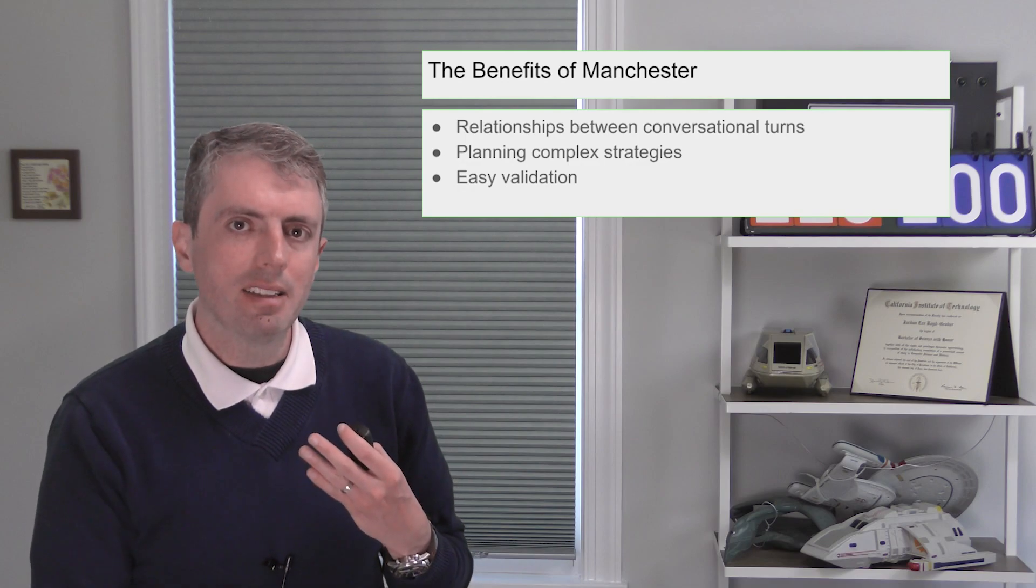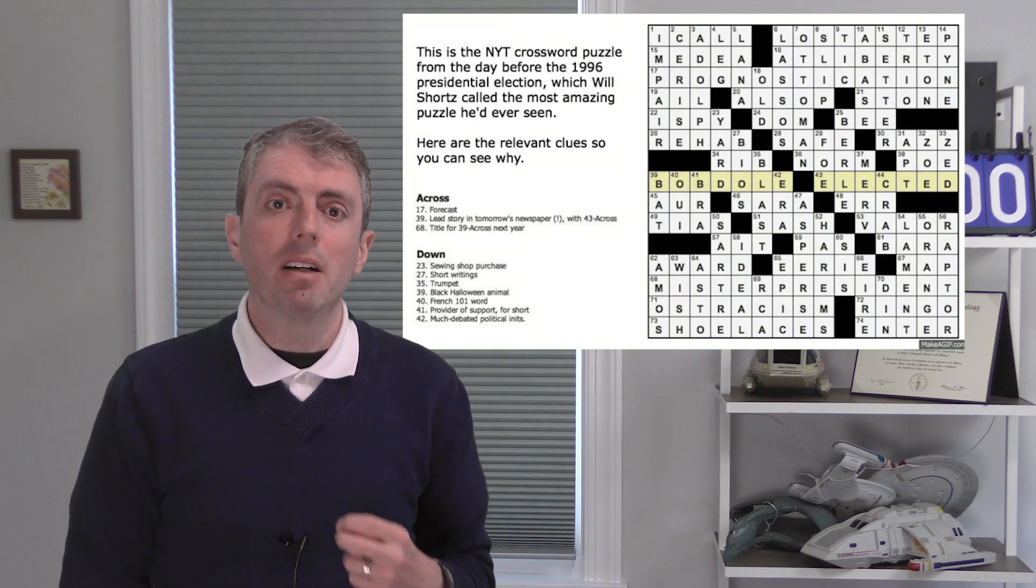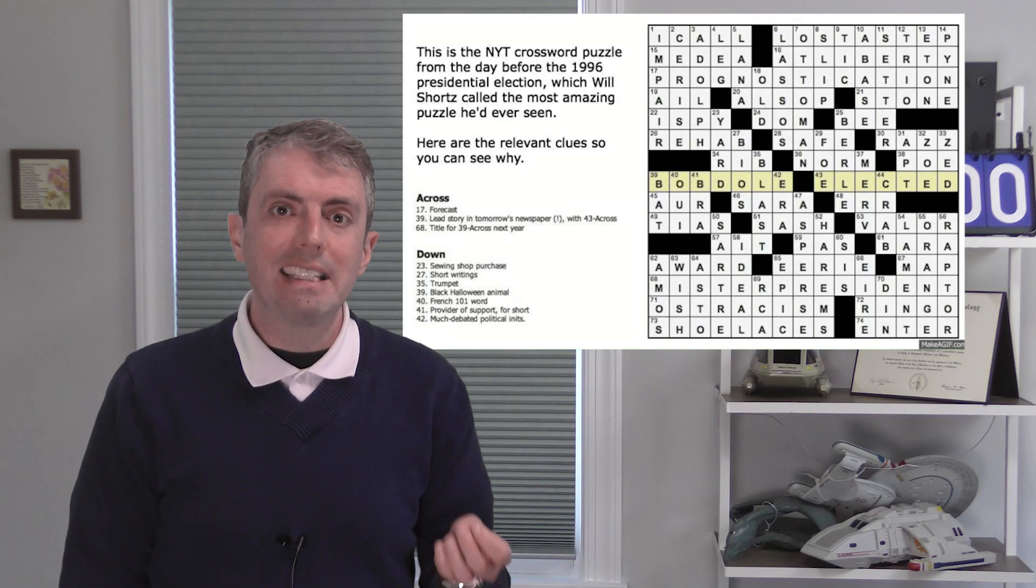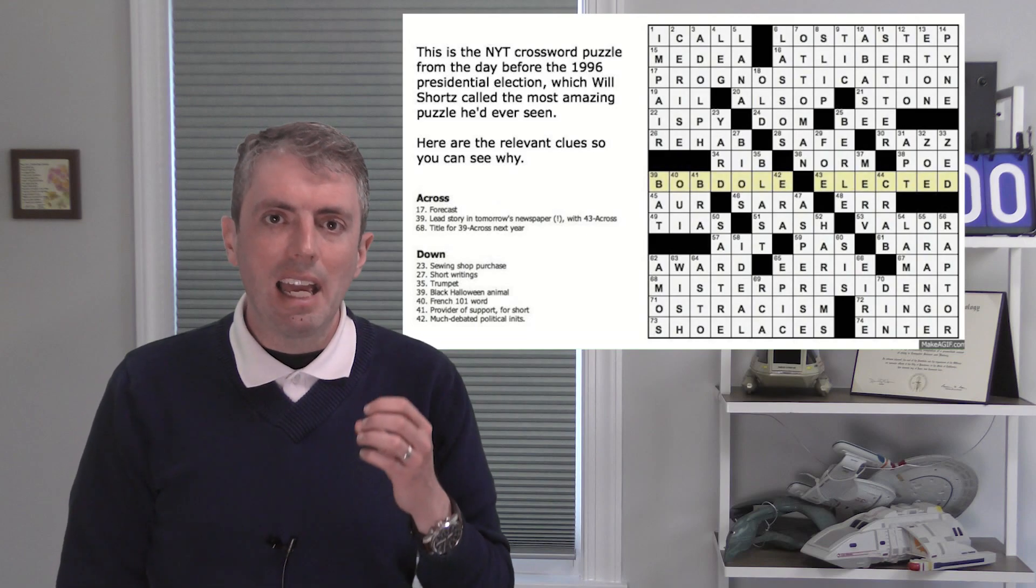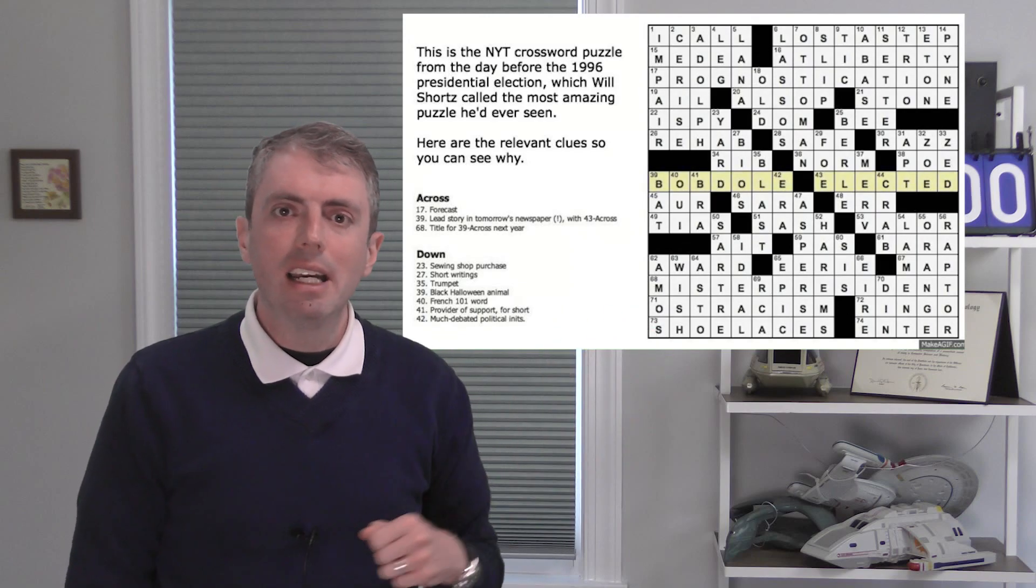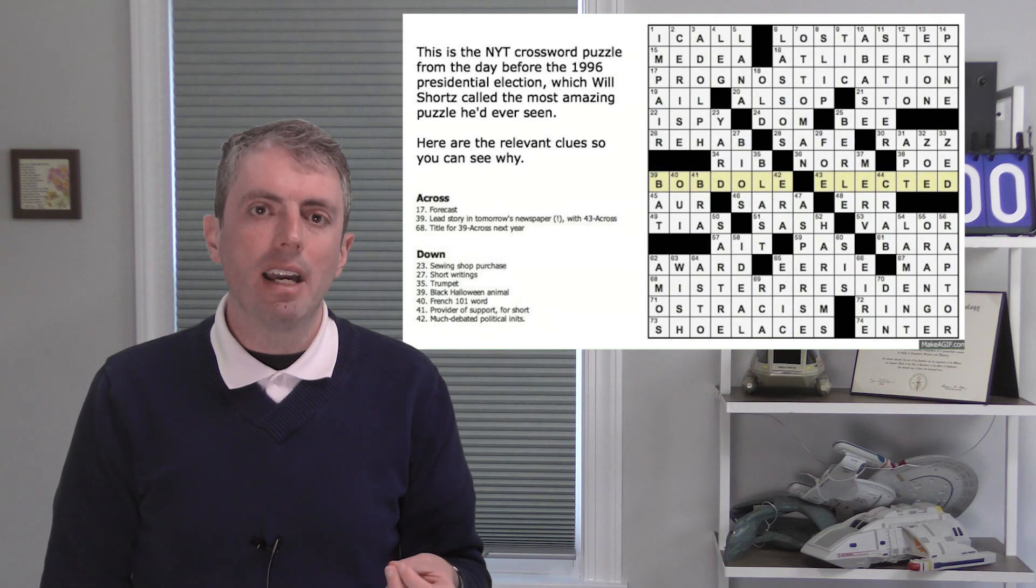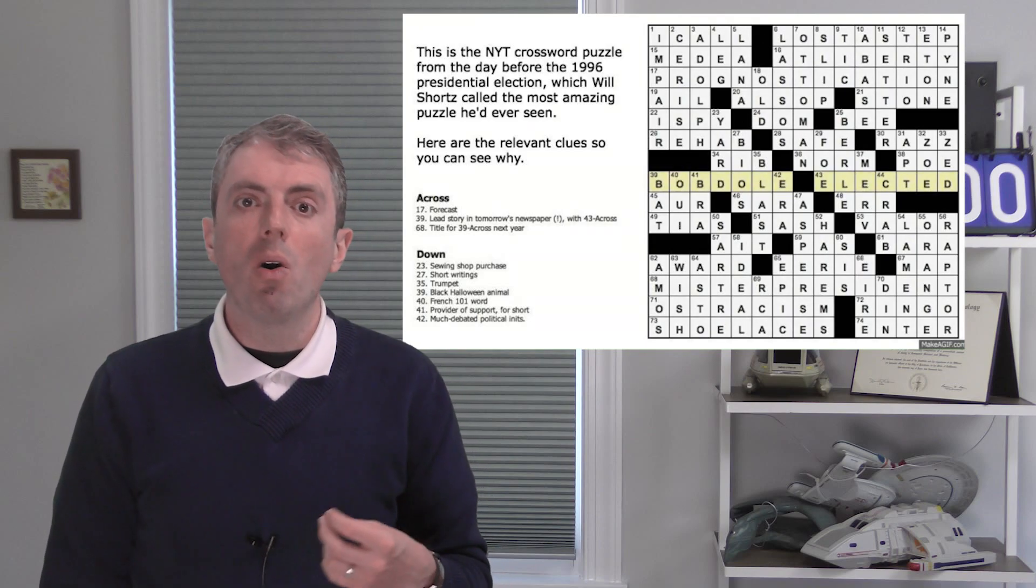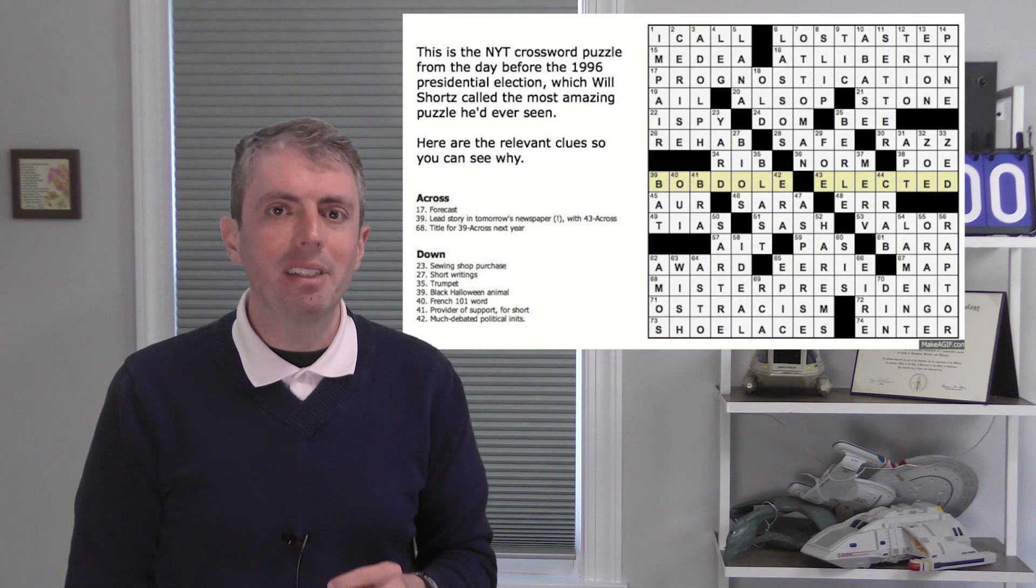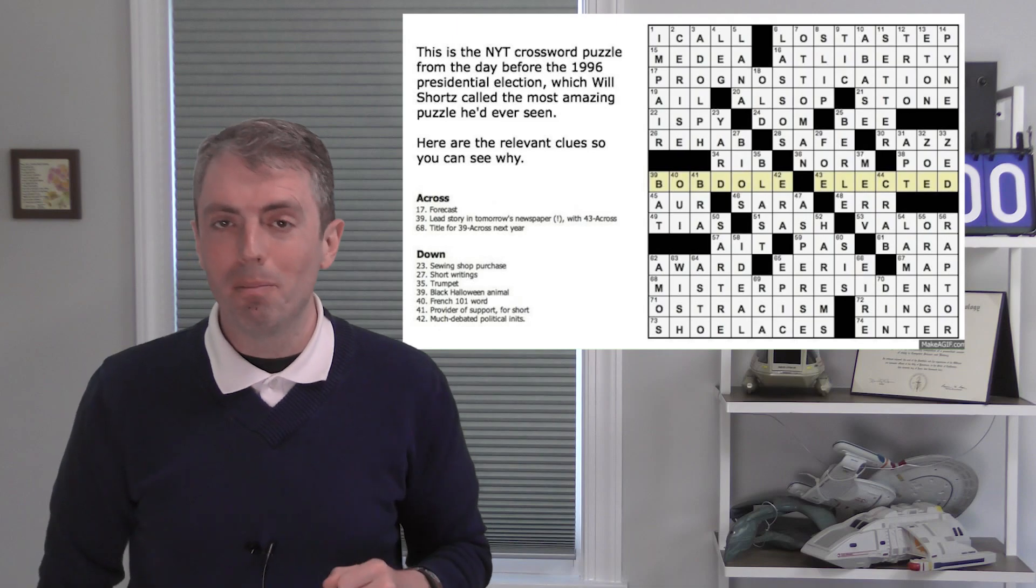To see how we could trip up computers, consider this classic crossword puzzle from 1996. This was published the day of the American election. And either Bob Dole or Clinton works as the answer to 39 across. All of the other clues work as well. 39 down, Black Halloween animal can either be CAT or BAT. 42 down, much debated political initials, is ERA, Equal Rights Amendment, for the E in Bob Dole, and NRA, National Rifle Association, for the E in Clinton. Will Shortz really outdid himself here, as these political initialisms are on both sides of the political aisle, just like Bill Clinton and Bob Dole.